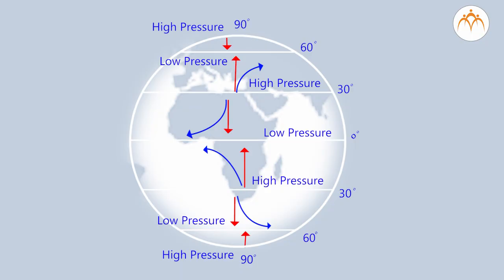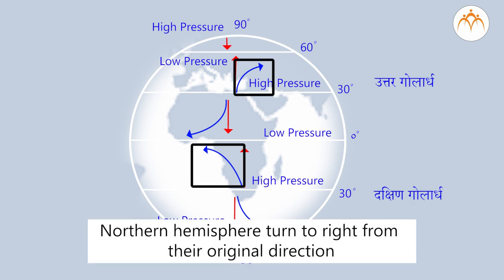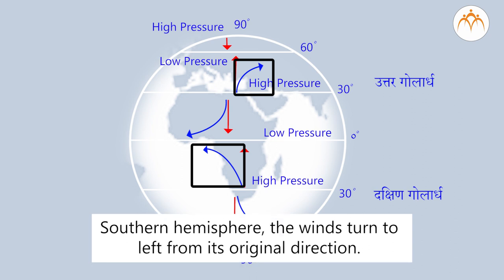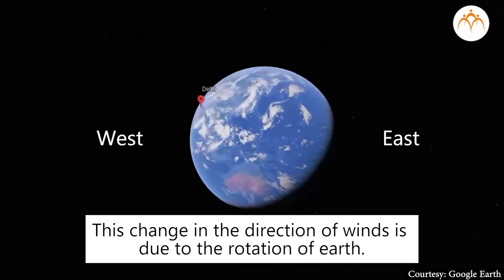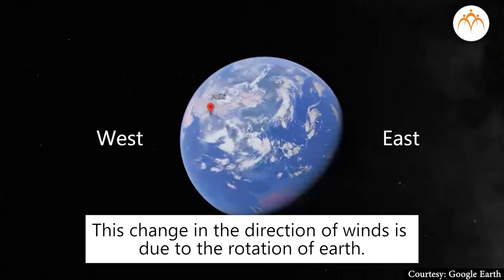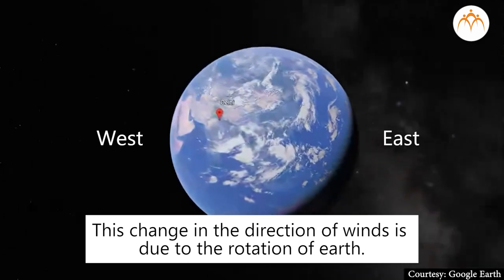The winds in the northern hemisphere turn to the right from their original direction. In the southern hemisphere the winds turn to the left from their original direction. This change in the direction of winds is due to the rotation of the earth.